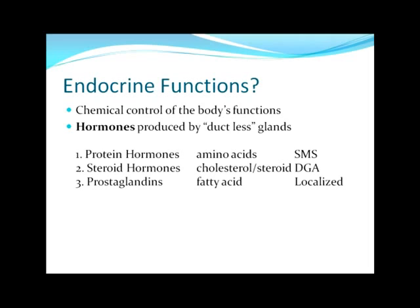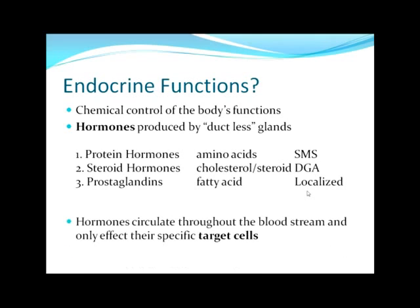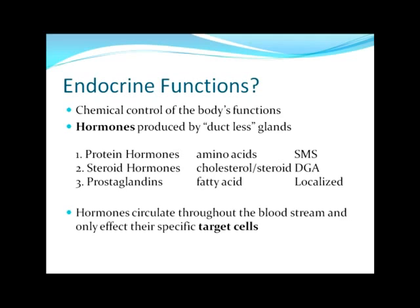We have three classes of hormones. The first is protein hormones, which are made out of amino acids and get into cells via a second messenger system. Then we have steroid hormones, made out of cholesterol or steroids, and they get into their target cells by way of direct gene activation. The third class is prostaglandins — they do not get secreted into the bloodstream but have a localized effect in the area where they are secreted. They are fatty acid in nature.